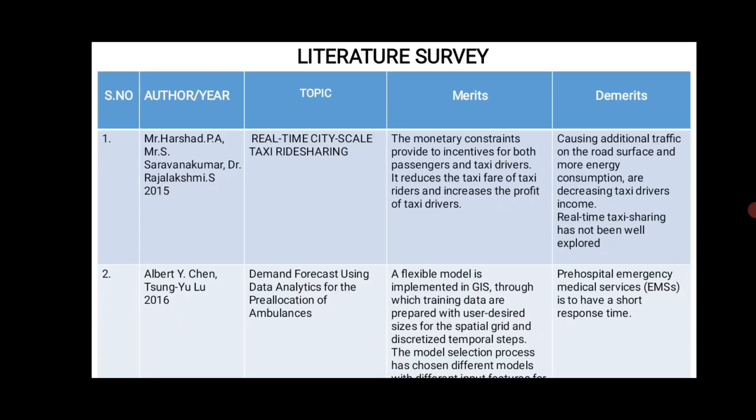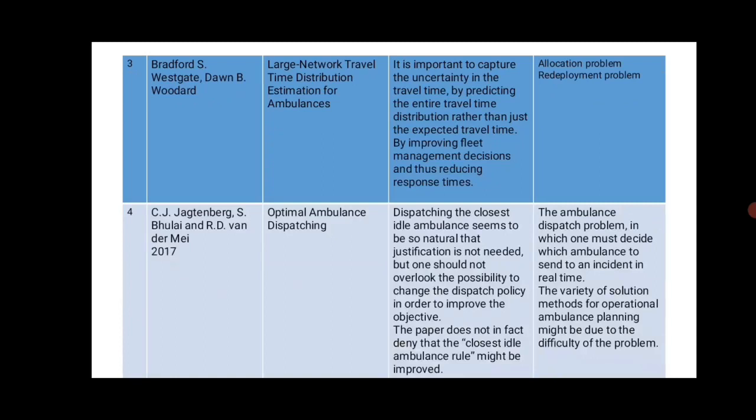Another paper by Brad S. Whitcart and Don Woodyard is on the topic of large network travel time distribution estimation for ambulance. It is important to capture the uncertainty in travel time by predicting the entire travel time distribution rather than just the expected travel time. The merit is improving fleet management decisions and reducing response times. The demerit is the allocation problem and redeployment problem.